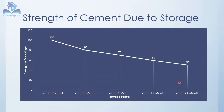When we store cement, the strength will be reduced over time. If you use a newly manufactured cement, you can get 100% of the strength with no reduction. If you use cement stored for 3 months, the strength reduces by 20%, so you can use 80% strength. If stored for 6 months, you can use only 70%, and if stored for 1 year, only 50% of the original strength remains.